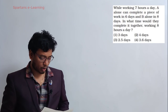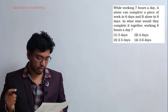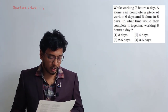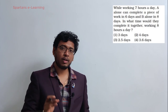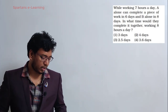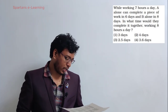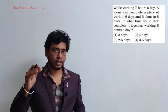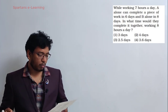Question 5: While working 7 hours a day, A alone can complete a piece of work in 6 days and B alone in 8 days. In what time would they complete it together if working 8 hours a day? Quick approach: LCM of 6 and 8 is 24. Efficiencies: A = 4, B = 3, combined = 7. Together at 7 hrs/day = 24÷7 days. Then adjust for 8 hrs/day: multiply by 7/8, giving 3 days.